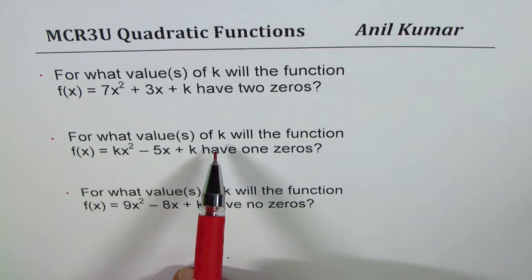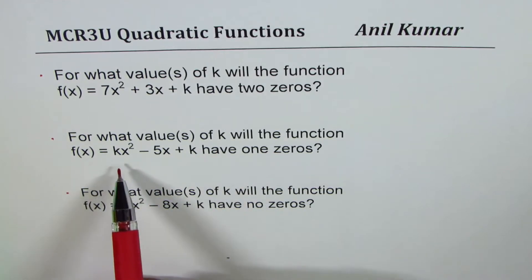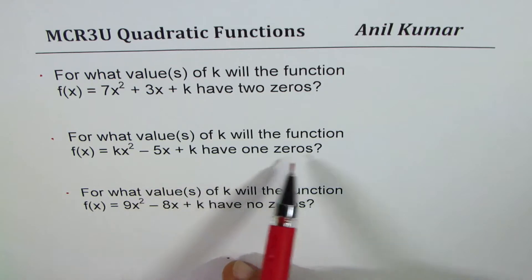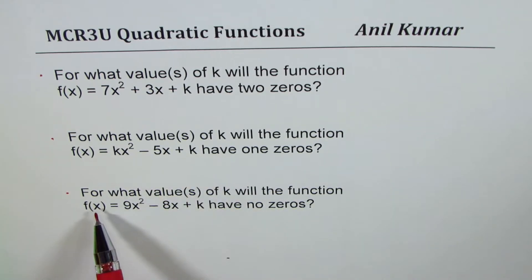Then we have for what values of k will the function f(x) = kx² - 5x + k have one zero. And third, for what values of k will the function f(x) = 9x² - 8x + k have no zeros.